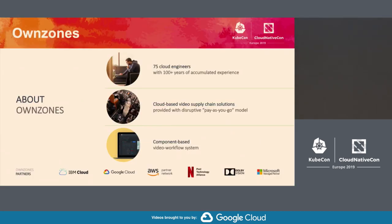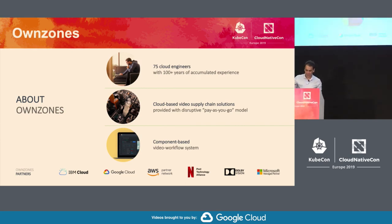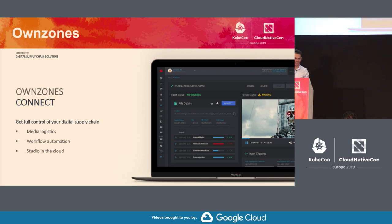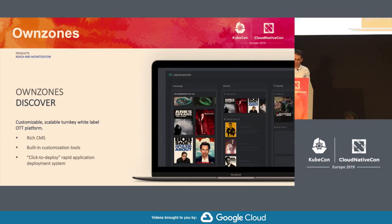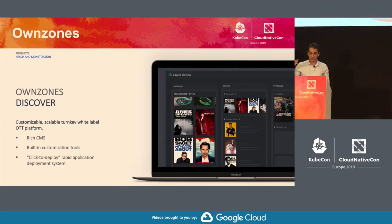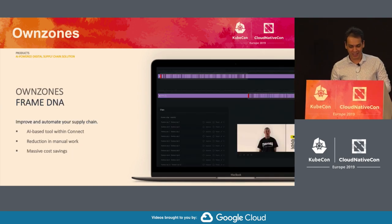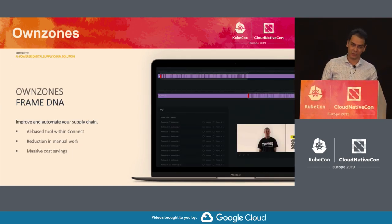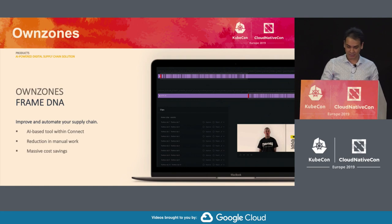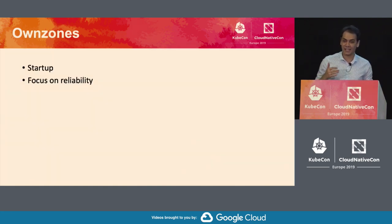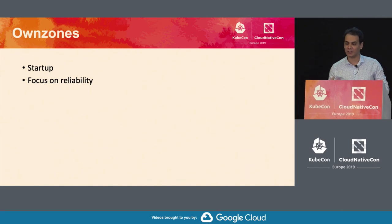I built this demo for OwnZones. They do video conversion in the cloud — instead of having a movie transcoded in hours or days, it's done in minutes. They also have a streaming product, delivering video to end users. Everybody's building their own streaming service right now, so this helps a lot. They also just announced Frame DNA, which is AI for video — if you have multiple versions, say a censored and uncensored version, this helps with managing that.